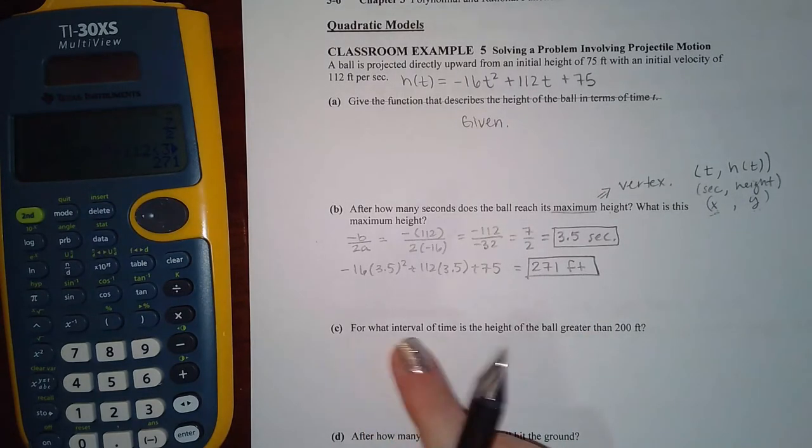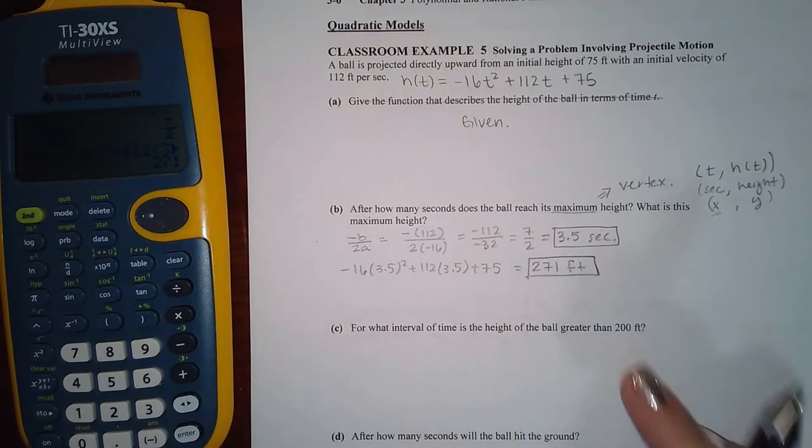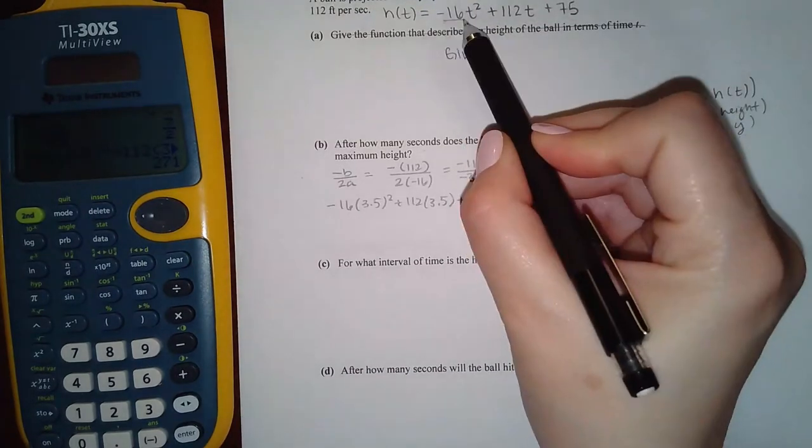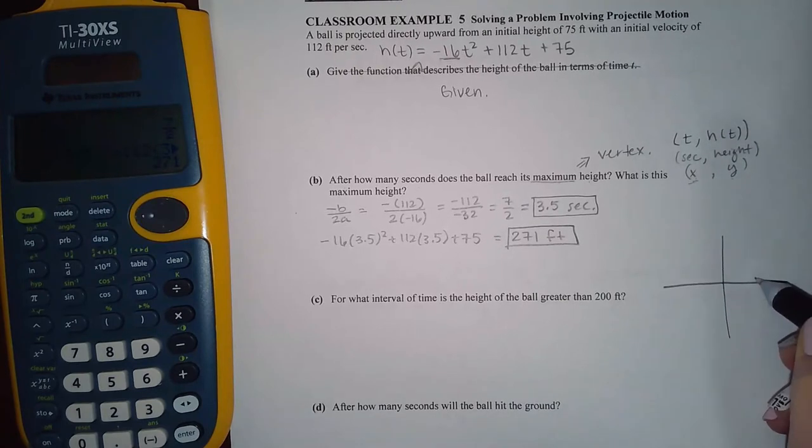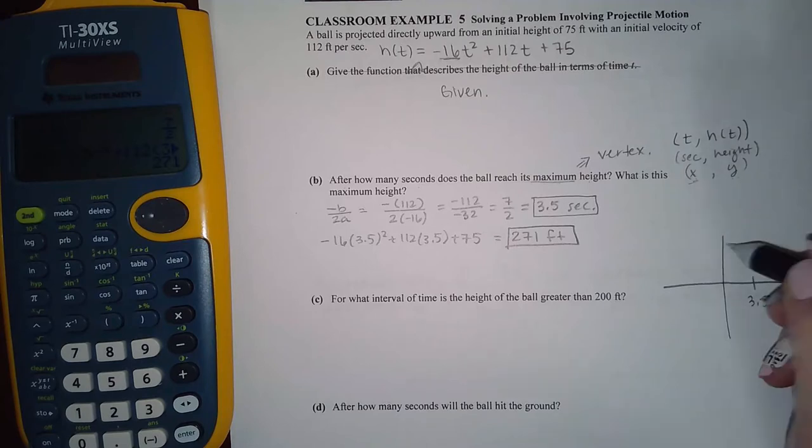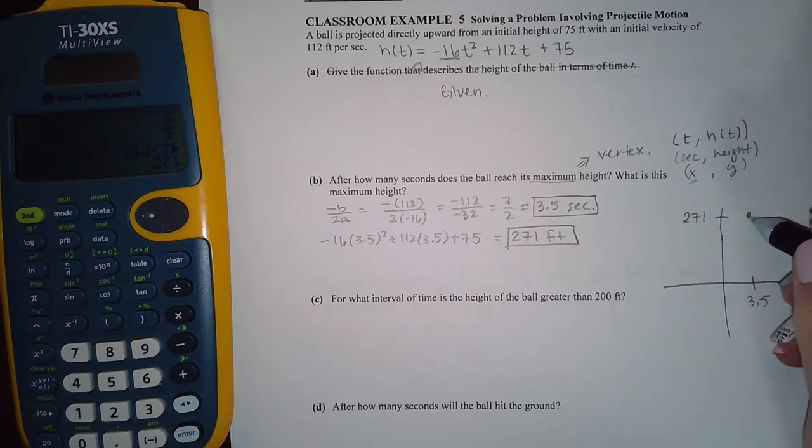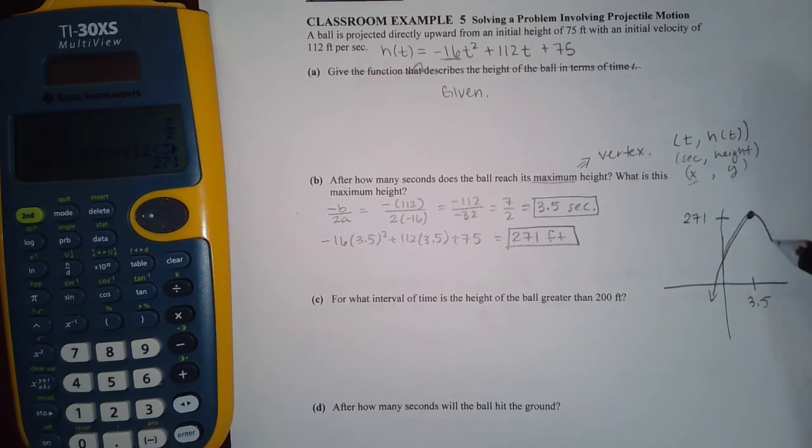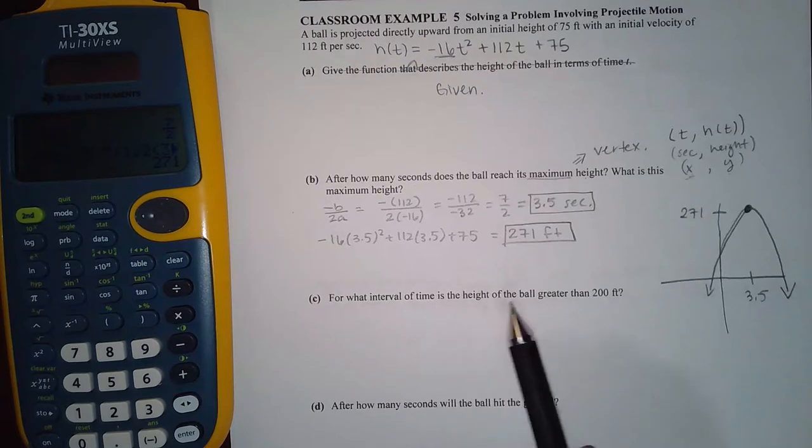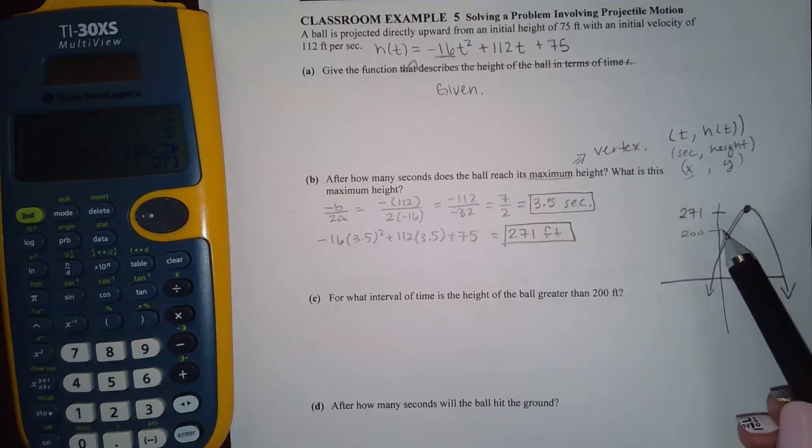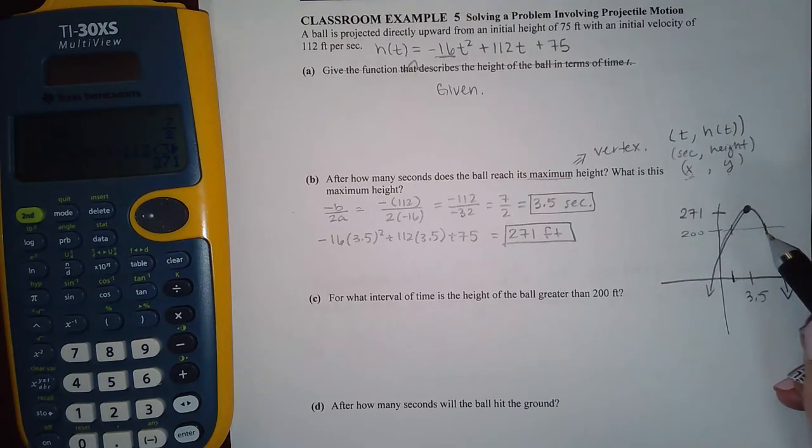Now here it says for what interval of time is the height of the ball greater than 200 feet. I already know that it's going to be opening downward because that's negative, right, the 16 is negative, so I know it's going to open downward. And if this is 3.5 seconds and let's say this is 271 feet, there's my vertex and I know it's opening downward. I'm just going to draw a parabola as best as I can. What I want to look for is, it says for what interval of time is the height of the ball greater than 200 feet. So here's 200 feet. I basically want to know what is this x value and what is this x value.